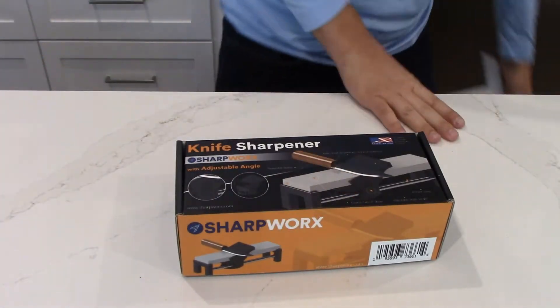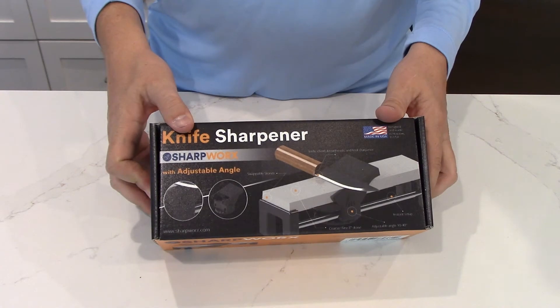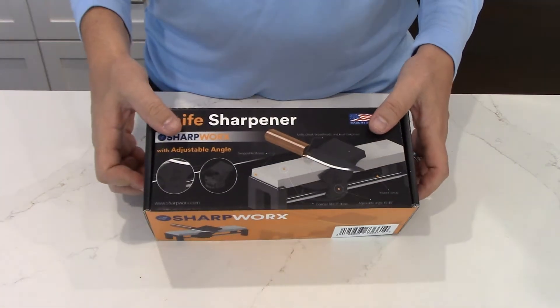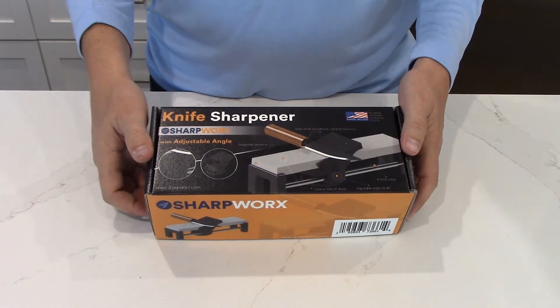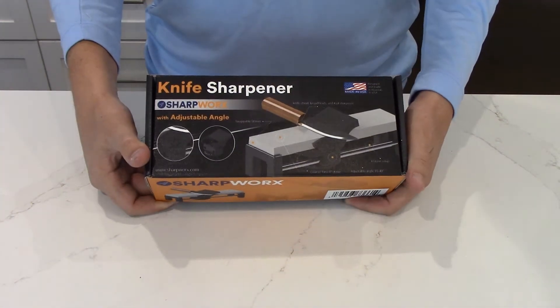And then this is the product box. It is designed to hold the knife sharpener and to be used. It's not a one-time box for presenting it in the store, but it's meant to store it and be reused.